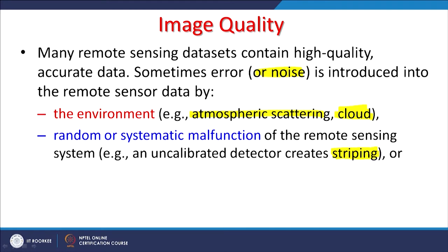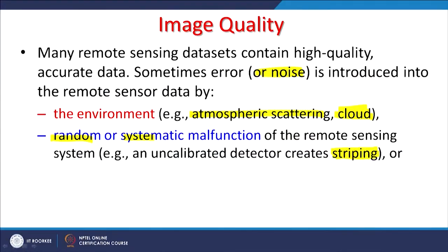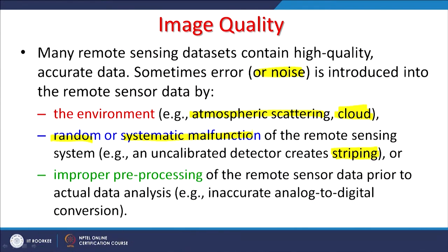For Indian remote sensing satellites, the striping problem has hardly ever been noticed since IRS-1A in 1988. The reason is that the electronics, sensors, and quality have improved significantly, and lot of testing is done for months or even years before sensors are sent into space. Random or systematic malfunctioning has now become a rare phenomenon.